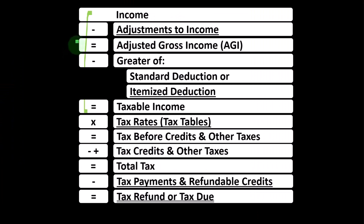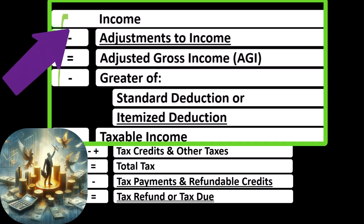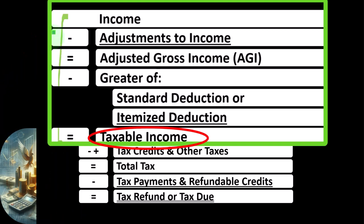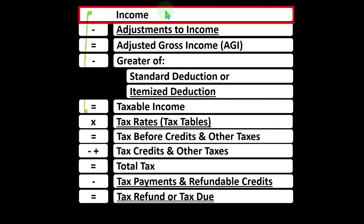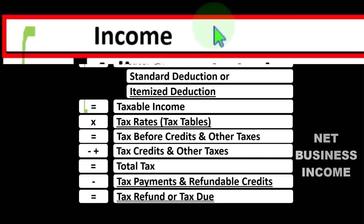Remember, in the first half of the income tax formula, basically an income statement — most income statements having income minus expenses, resulting in net income. Here, having income minus deductions, resulting in taxable income. The Schedule C rolls into line one income of the formula. In the Schedule C itself, basically an income statement as well, having business income minus business expenses, resulting in net business income, which rolls in from the Schedule C to line one income of the formula.